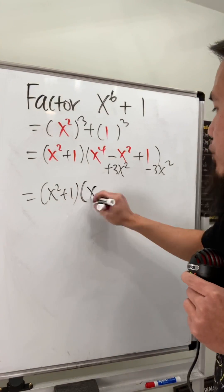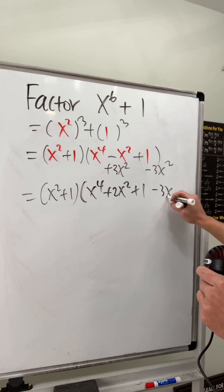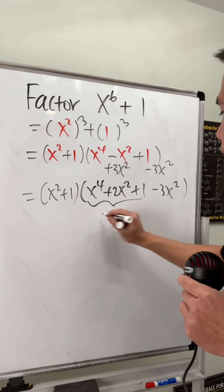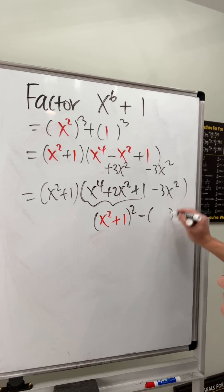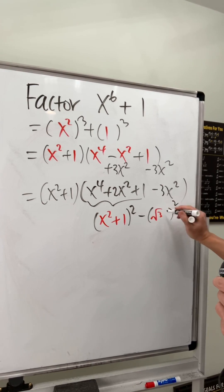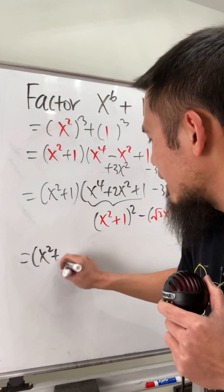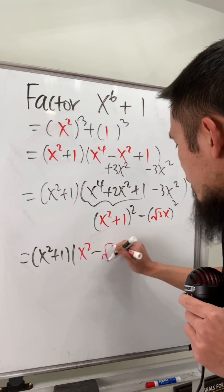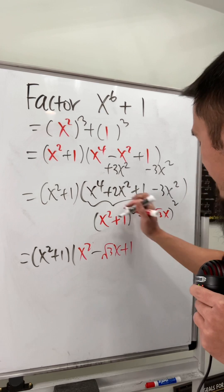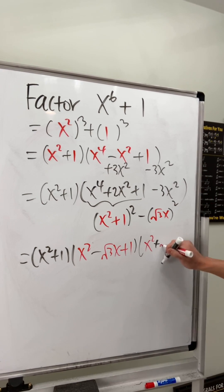You will see this right here becomes x squared plus 1 — this is not factorable with the reals — and this right here is x to the fourth power plus 2x squared plus 1, and then minus 3x squared. Notice that this right here is going to be a perfect square, x squared plus 1, and this right here is also going to be a perfect square if you use square root numbers. So now we can factor this: the answer is x squared plus 1, times x squared minus square root of 3 times x plus 1, times x squared plus square root of 3 times x plus 1.